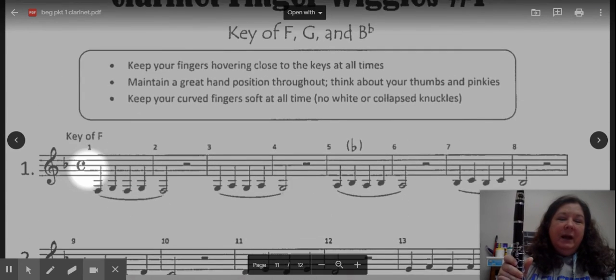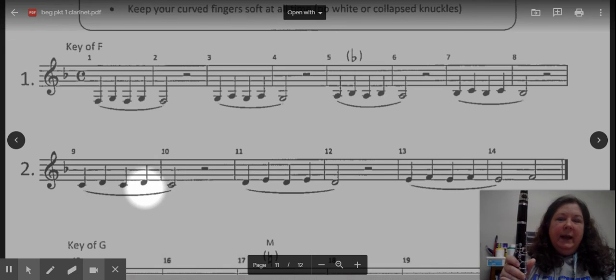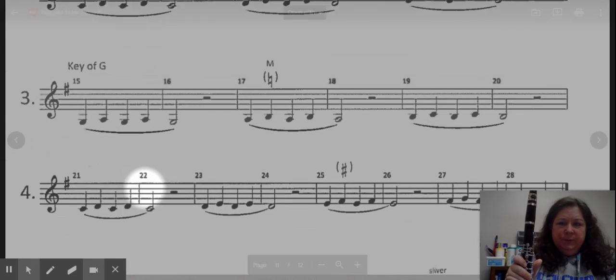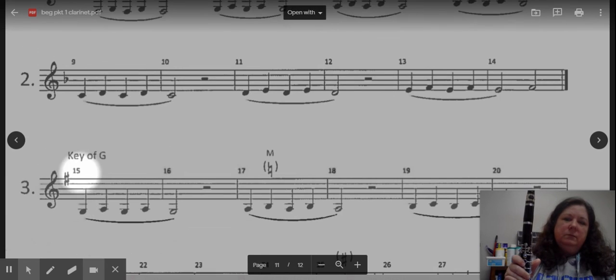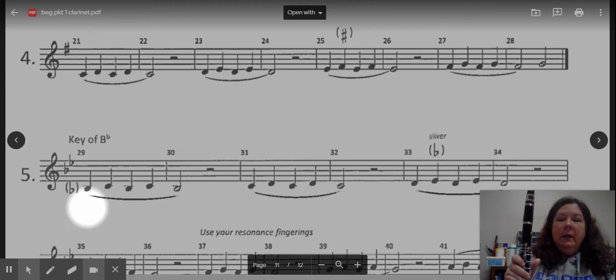Next measure, 39. We have G. So right hand is down for this G because we're using our resonance fingerings. And then we're going to rock up to the A key. So G, A, G, A, G.